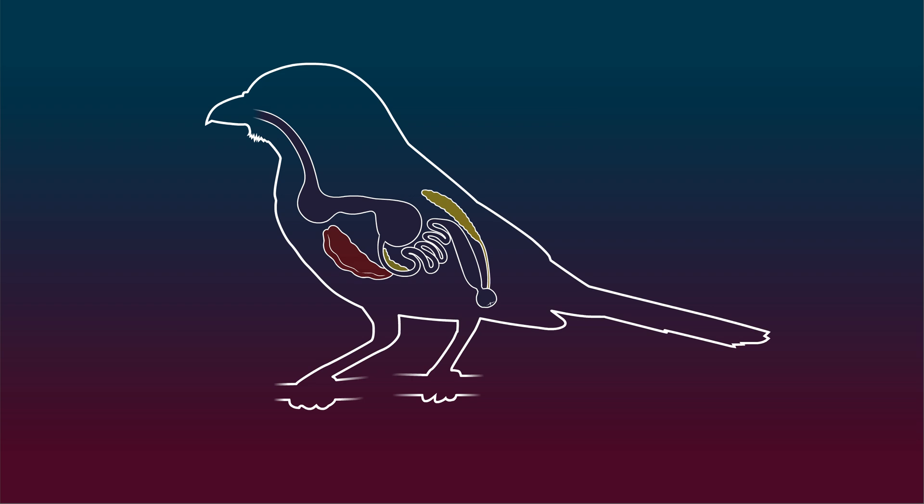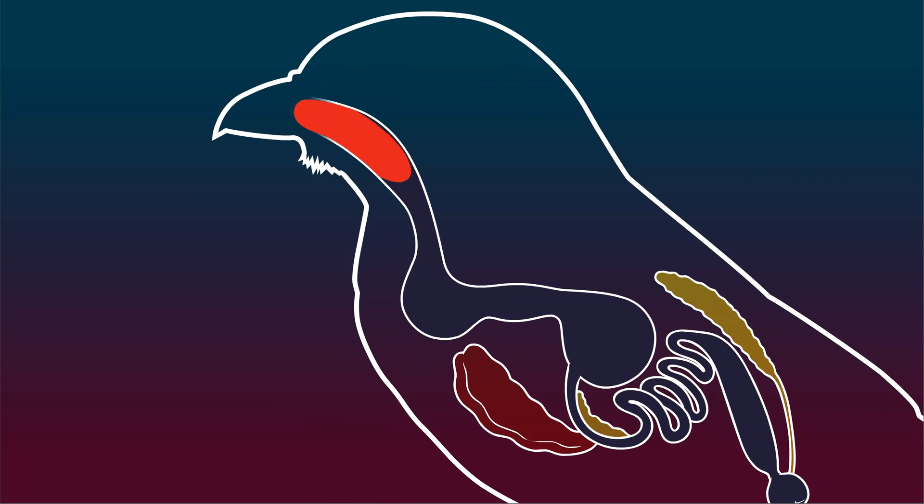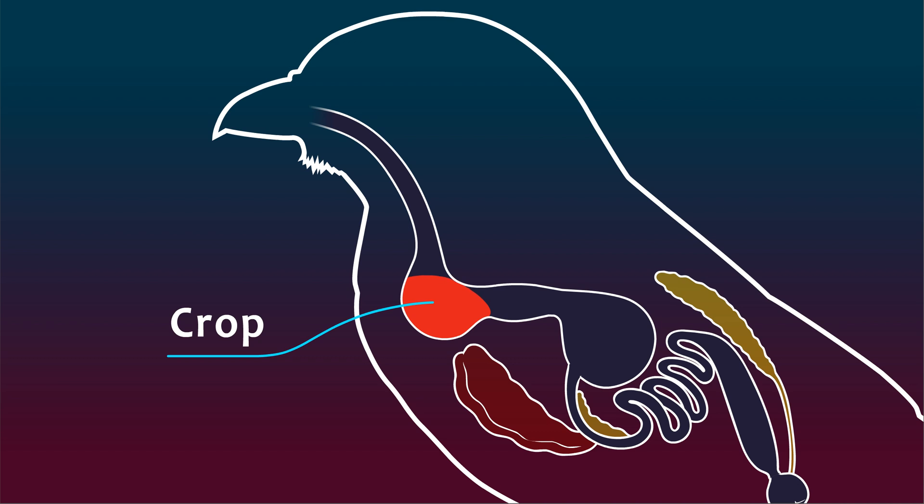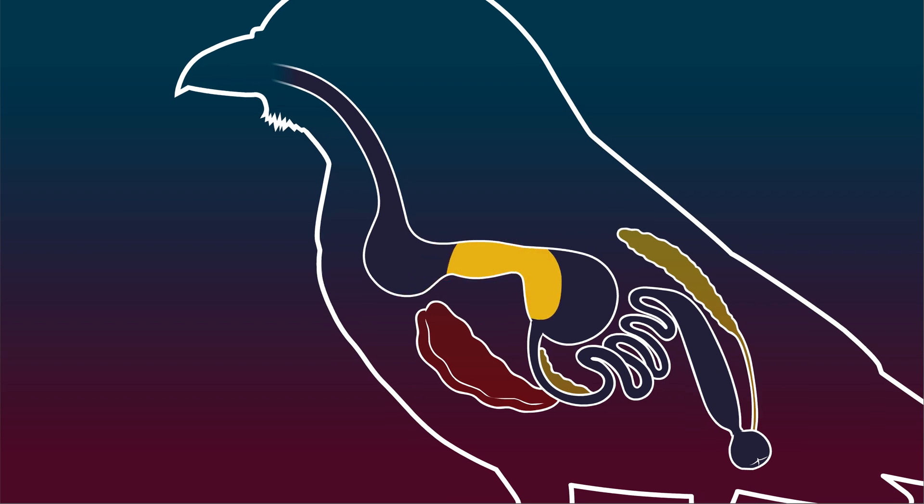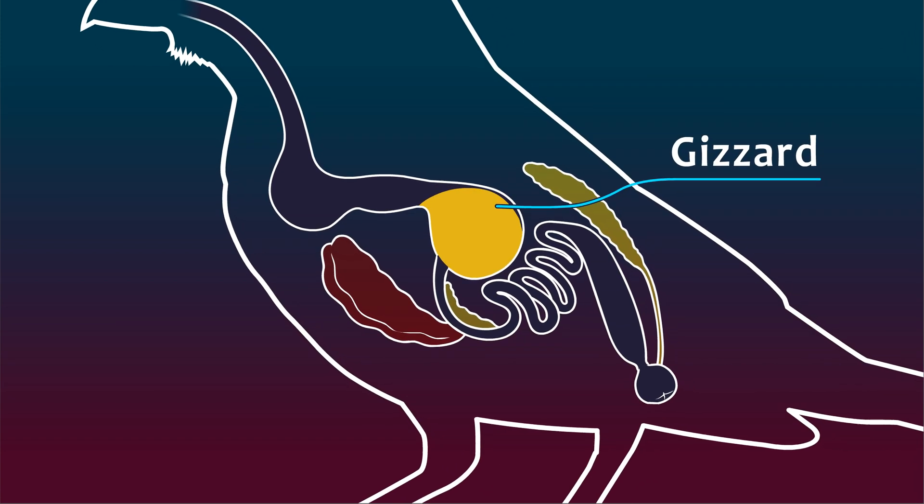Birds swallow their food. They don't have teeth to chew. Food passes to the esophagus. The esophagus has an enlarged part called the crop. Here the food gets moistened and then passes towards the first chamber of the stomach known as the proventriculus. Here the food starts breaking down by digestive enzymes and acids, then moves further to the muscular chamber known as the gizzard.